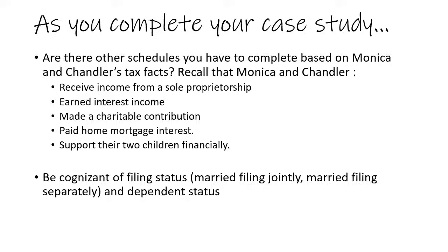Think about the facts of the case and what kind of income and expenditures Monica and Chandler have that are allowed under federal tax code. Recall that they received income from a sole proprietorship, they earned interest income from the bank, they made a charitable contribution, paid home mortgage interest, and support their two children financially. You should also be cognizant of the filing status and the dependent status, as this will make a difference in the tax liability owed.